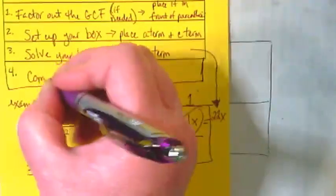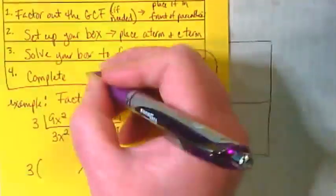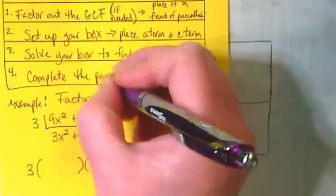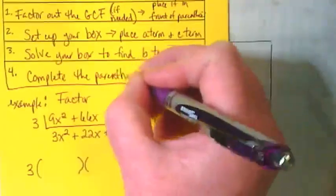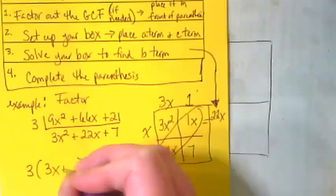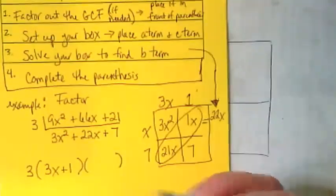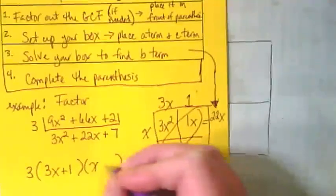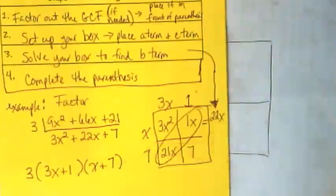Our step 4. Complete the parenthesis. 3x has to be in a parenthesis with plus 1. And x has to be in a parenthesis with plus 7.